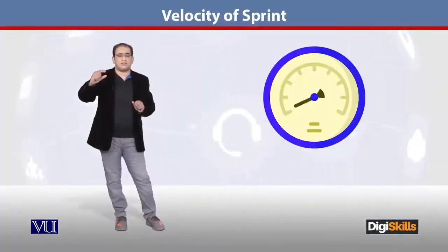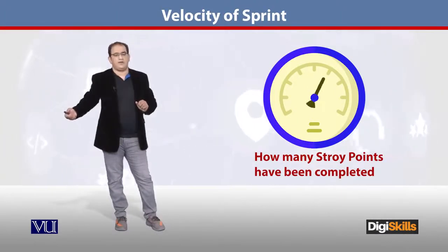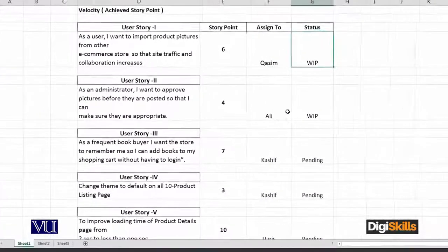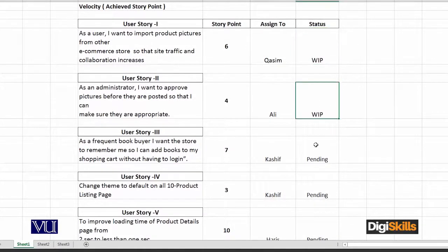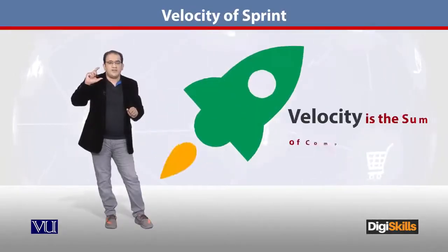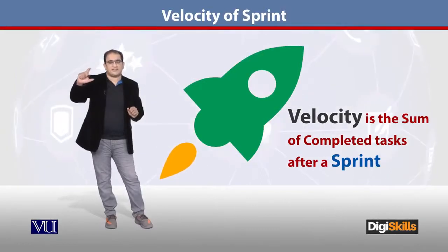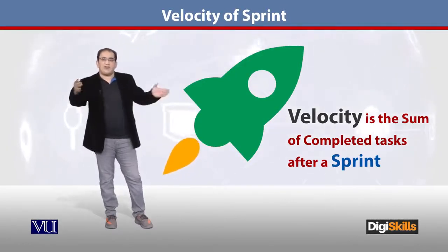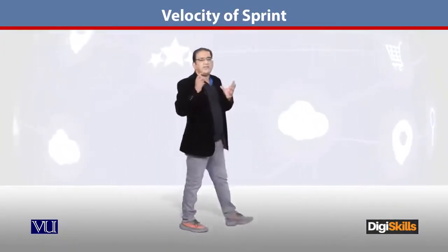For example, if you had planned 30 user stories — 30 story points — that was planned. Velocity is the measure of how many story points you actually complete. The task column has work in progress, pending, but if it is not marked done, it does not count. Velocity is the sum of those tasks which are done after a sprint. So when we plan the next sprint, we have an idea of how much velocity the team is achieving.